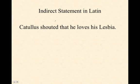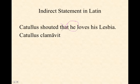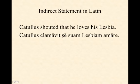Another example: 'Catullus shouted that he loves his Lesbia.' In Latin: Catullus clamavit. There is no word for 'that.' Since Catullus is the one who loves his Lesbia, we use the reflexive pronoun se. The verb becomes an infinitive: amare. So: Catullus clamavit se suam Lesbiam amare. Note that there is some flexibility in word order — the infinitive could appear immediately after the subject within the indirect statement, with the object last.